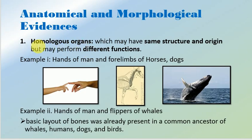First of all, we will study the homologous organs. Homologous organs are the organs which have the same structure and origin but perform different functions.